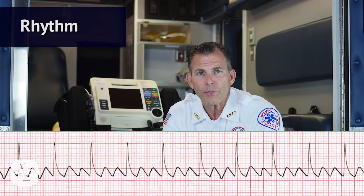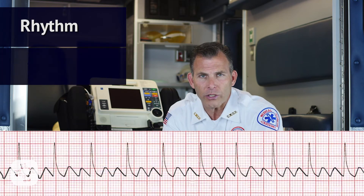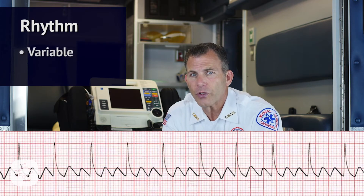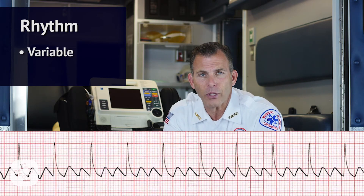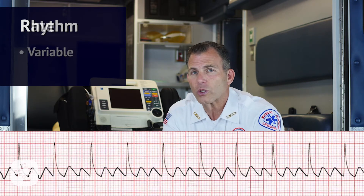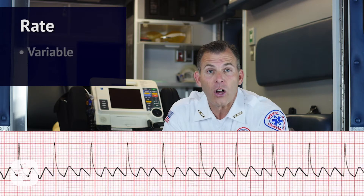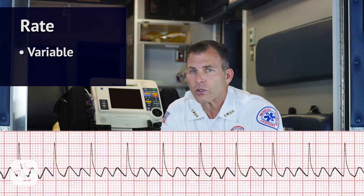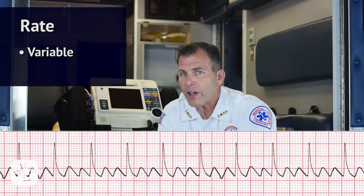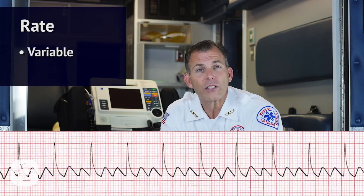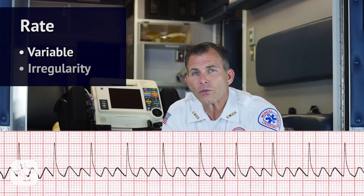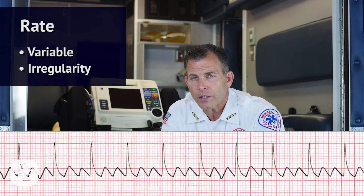Let's take a closer look at the ECG now. Is the rhythm regular or irregular? It's variable depending on the ratio of F waves to QRS complexes. When we look at the rate, what is the rate? The rate is also variable. Is the rate normal, fast, or slow? The rate is variable because of its irregularity.